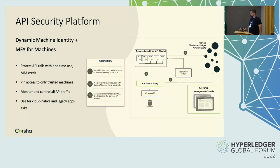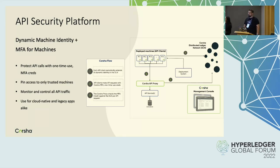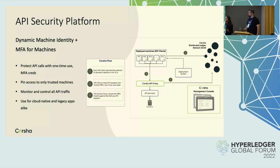In front of the API services where you want to enforce MFA, you place our proxy. That proxy is going to be looking for these MFA credentials on API requests — they come in as custom headers. The client, based off its chained moving identity, produces these one-time use credentials. The proxy picks off the MFA credential built off that identity, checks it against the ledger, and if there's a match with that machine's identity, you let the call through; otherwise you block it. Very similar to how an out-of-band TOTP check would work.